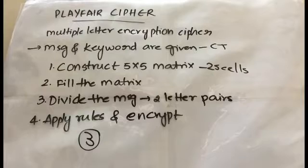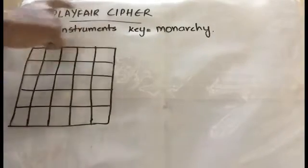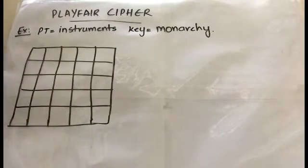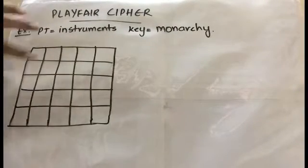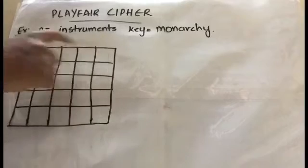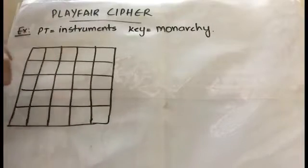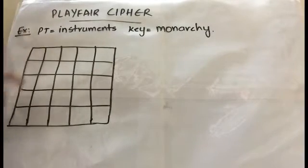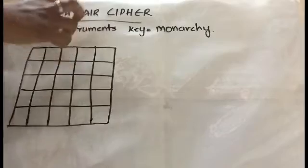In our example, the plain text is 'instruments' — this is the word we have to convert into cipher text. The key we are using is 'monarchy'. We have a 5×5 matrix with 5 rows and 5 columns, giving 25 cells total. The vertical lines are columns and the horizontal lines are rows.